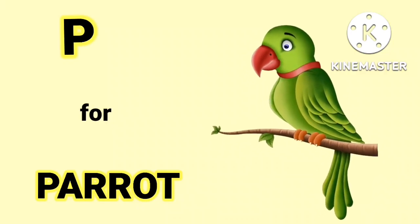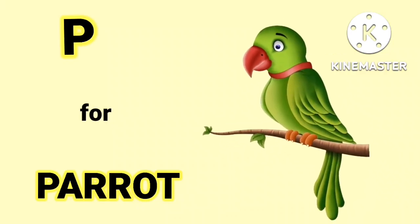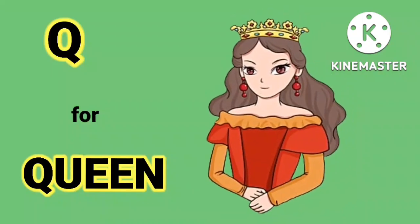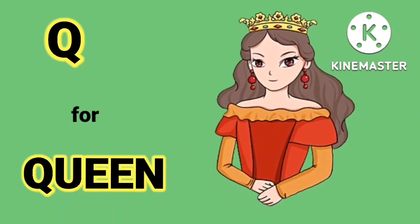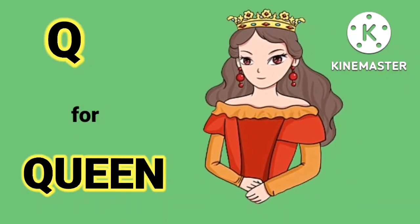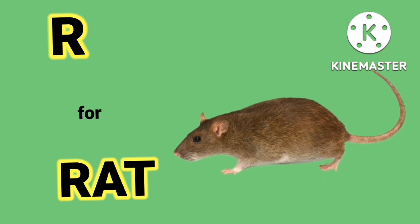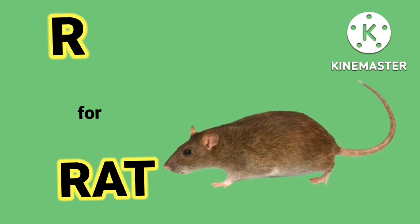P for parrot, parrot मैंने तोता. Q for queen, queen मैंने रानी. R for rat, rat मैंने चुहा.